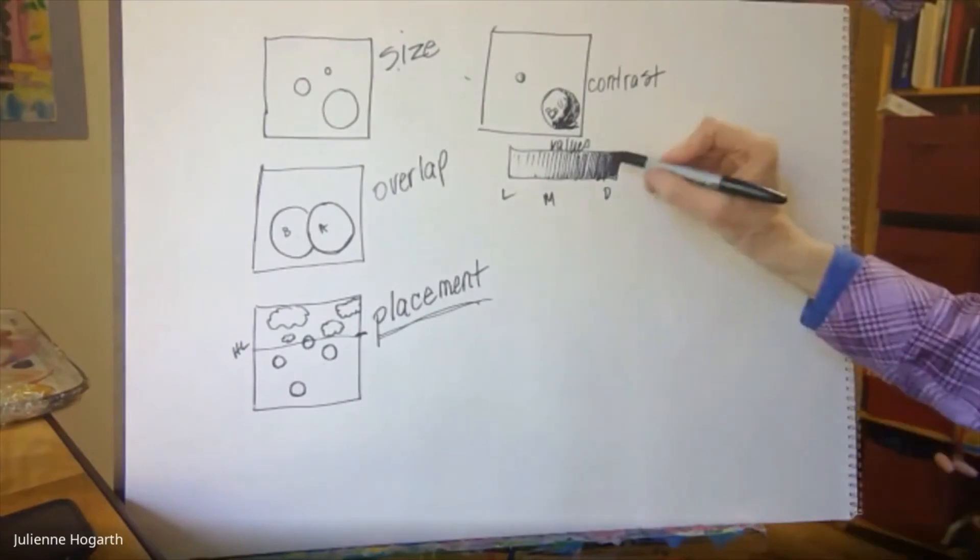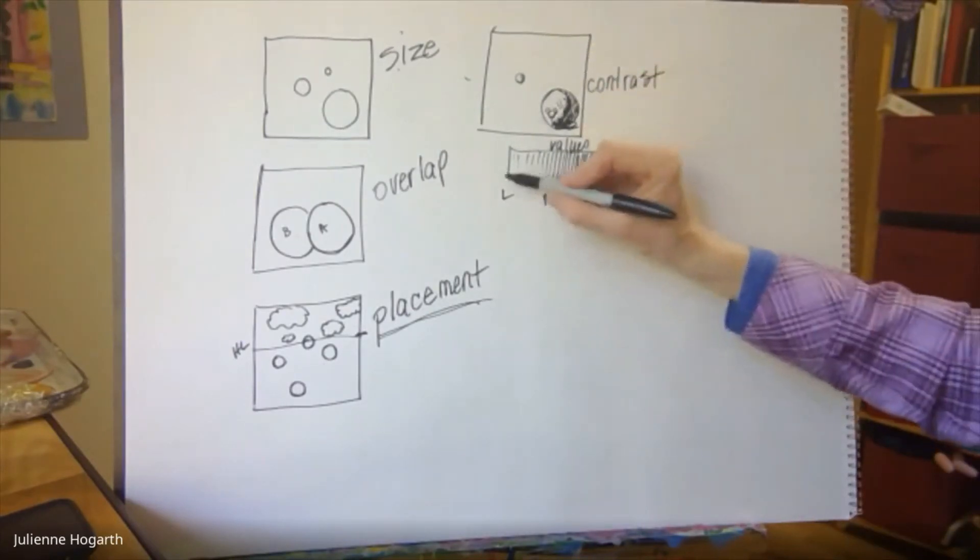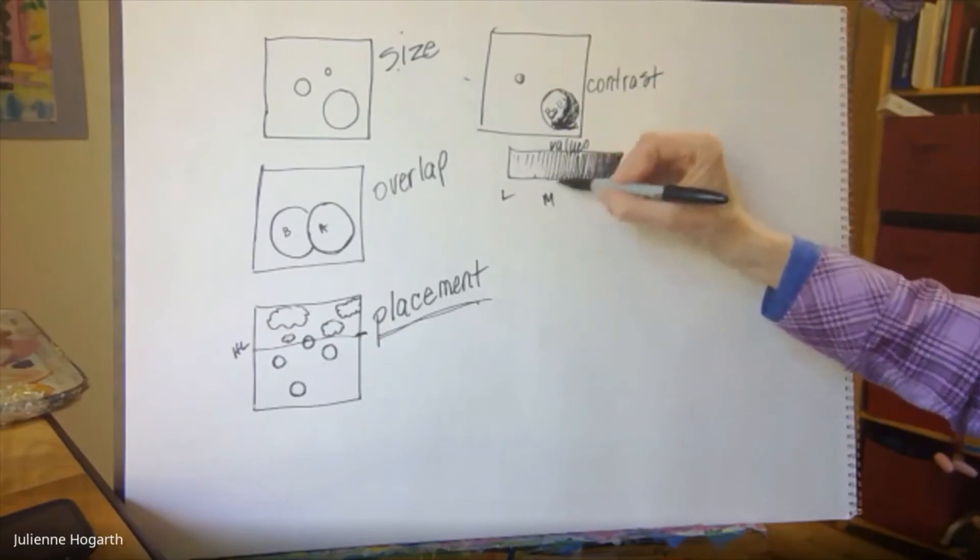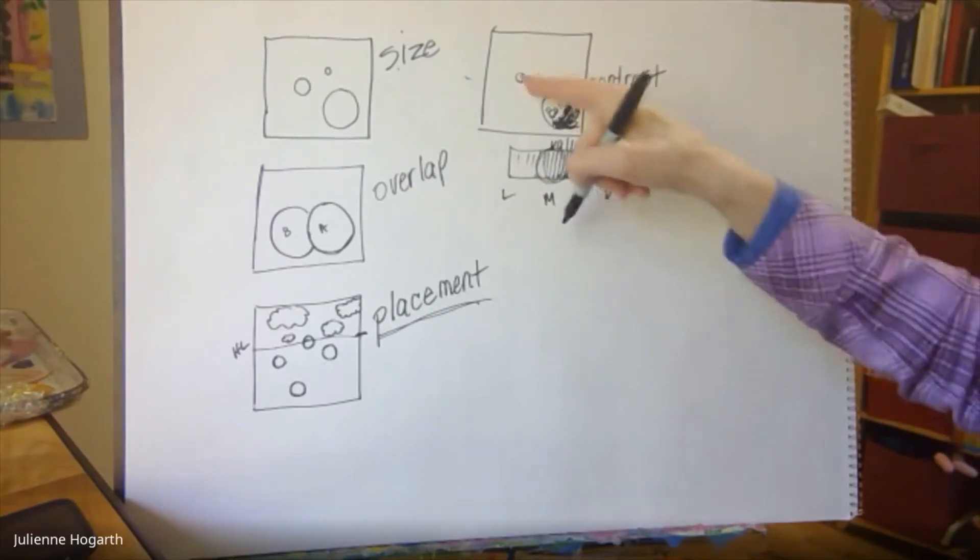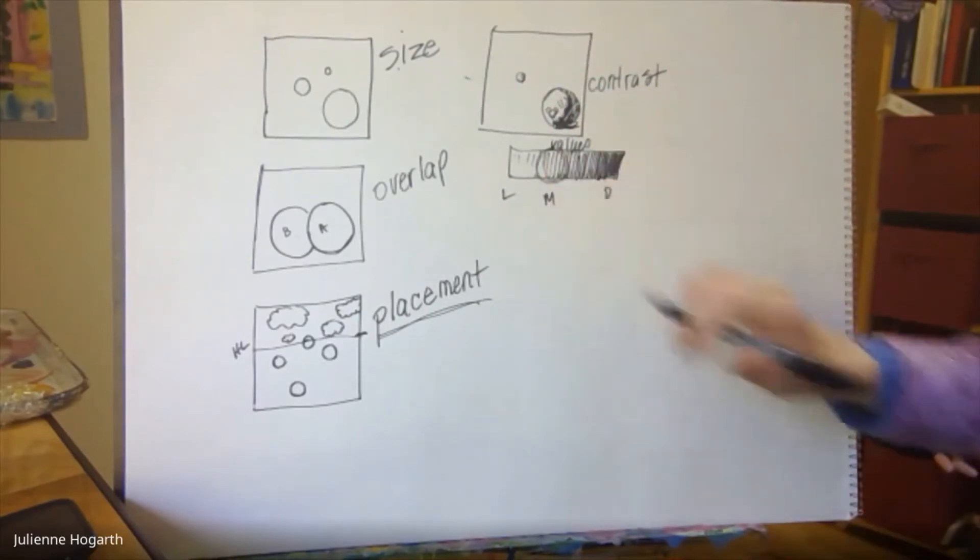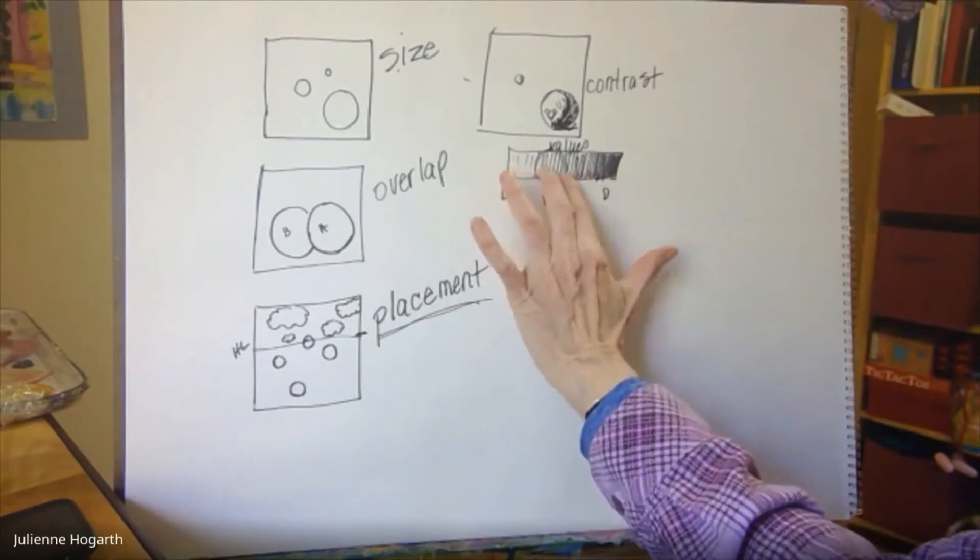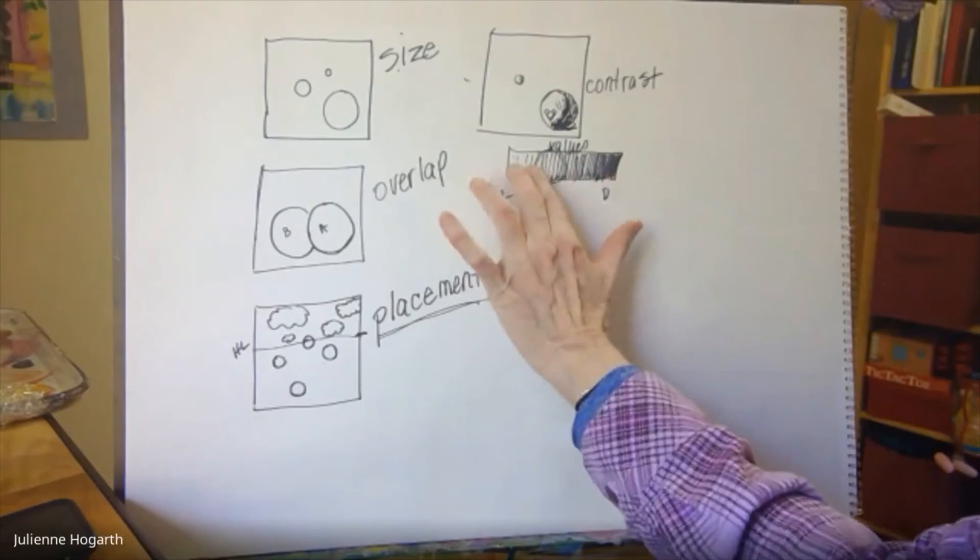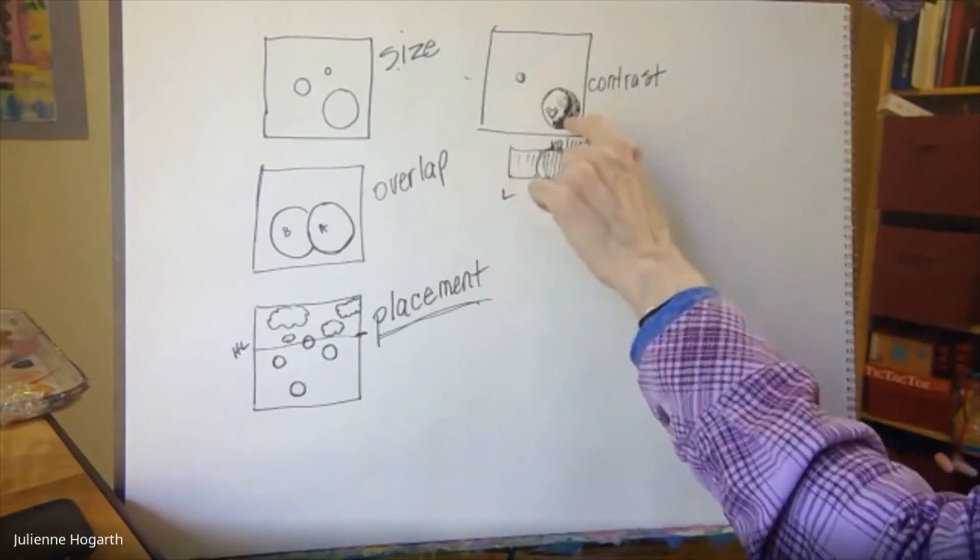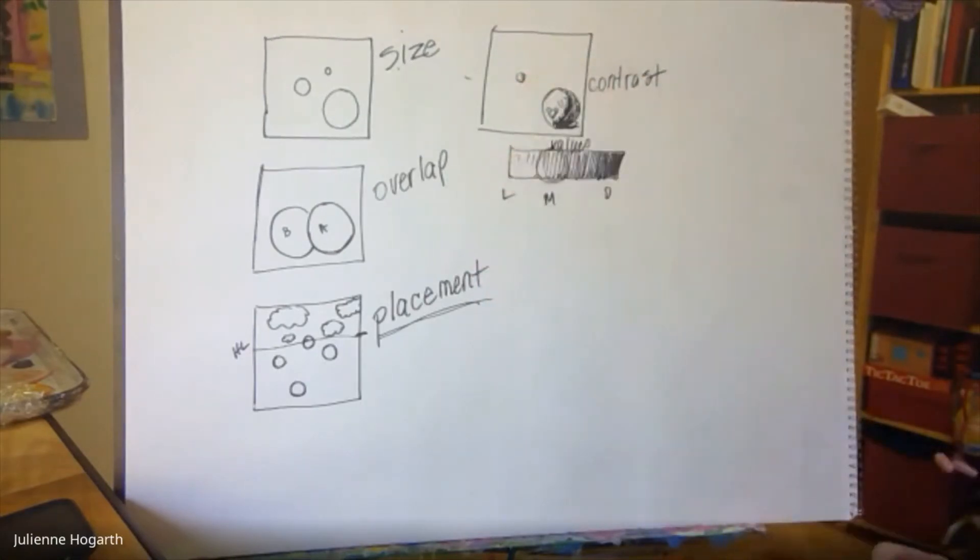So I have all of these values going up close and I have just these values going further away. So this is less contrast. When you have all the values here you have more contrast. When you have wherever you're at you have less contrast. So more contrast is closer less contrast is further away.